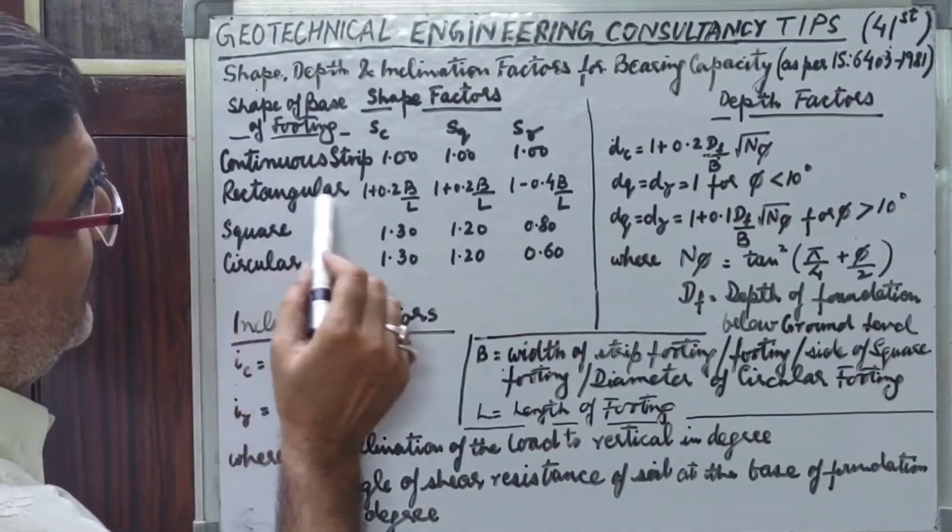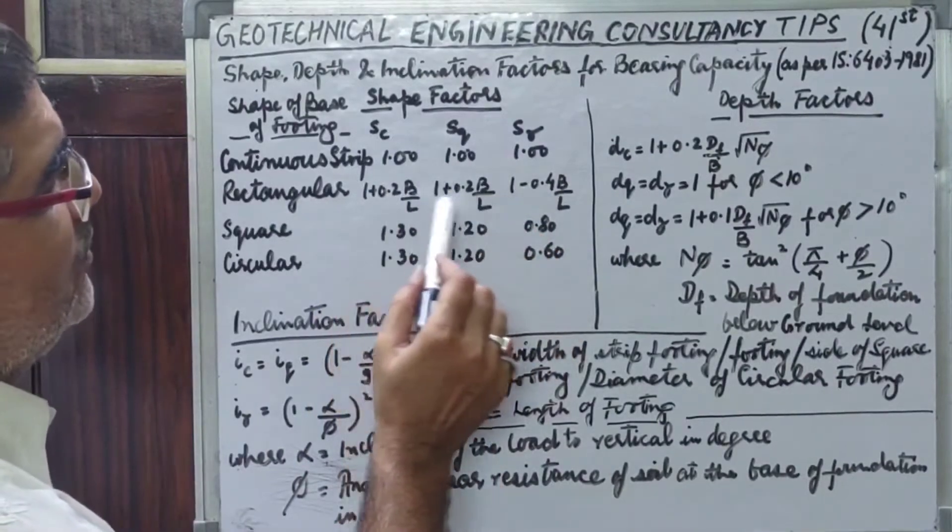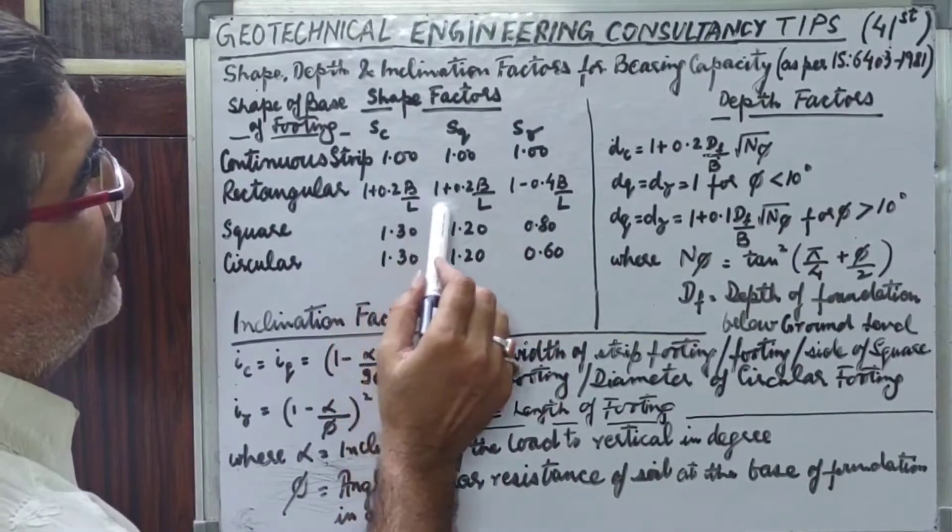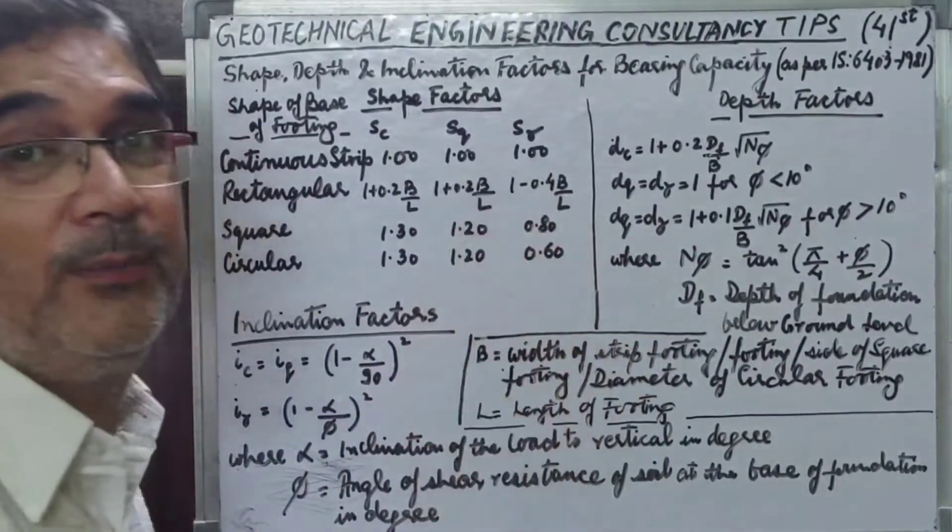So in rectangular cases, Sc and Sq is equal to 1 plus 0.2 B upon L. S gamma is 1 minus 0.4 B upon L.